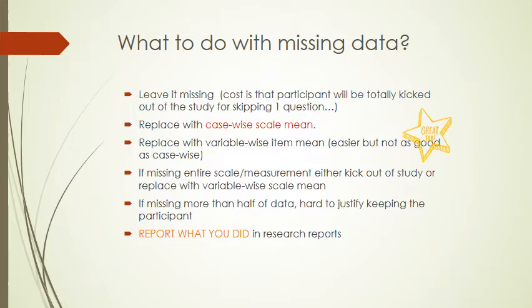That might make sense if you're trying to look at the effects of age on something and you don't have their age and have no way to get that information — then they're just not going to be in your study. But if you give them a scale such as the Beck Depression Inventory and they skip one question, what you would probably do is add up their total score, find their individual mean score, and replace the missing item with that individual mean score, so their total scale score is meaningful and on the same scaling as everyone else.